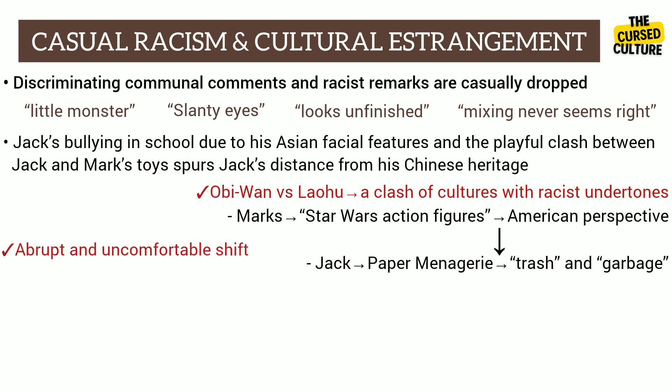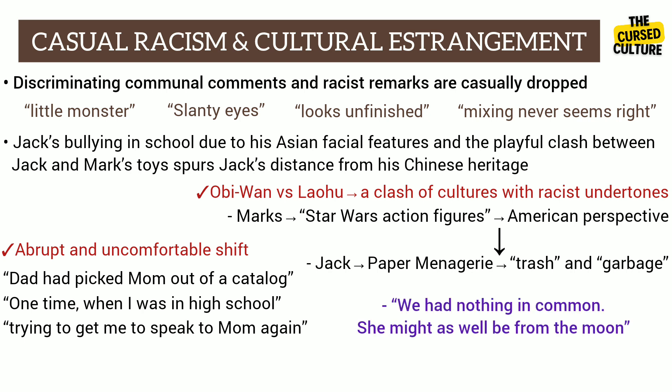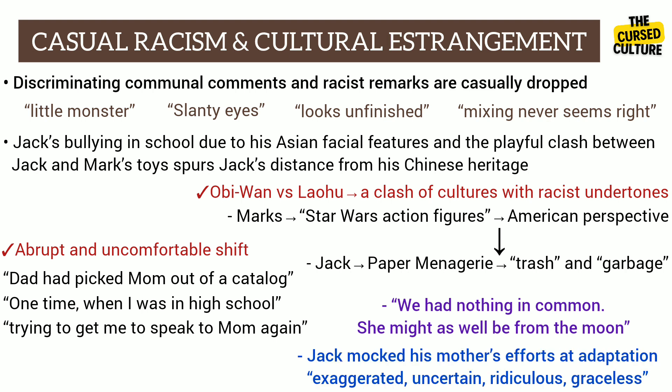There is an abrupt and uncomfortable shift in the narrative, mentioning how Dad had picked Mom out of a catalog and advancing to one time when Jack was in high school. The father is now trying to get Jack to speak to Mom again, to reconcile the relationship between the son and the mother. Jack had become emotionally distant from his mother in an effort to sever his ties with his Chinese roots, scorning that they had nothing in common and that she might as well be from the moon. He mocked his mother's efforts at adaptation as exaggerated, uncertain, ridiculous, graceless.